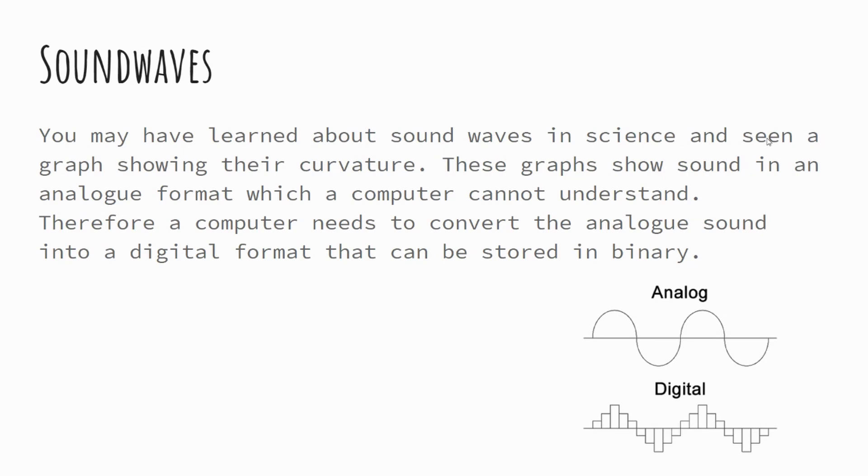So at the bottom right, you can see an example of an analog sound wave and then a digital representation of it. And you can notice that it's quite blocky. And that's because we're using binary data, so ones and zeros, to represent that curve. And therefore, a bit like in images where we use pixels, we'll use blocks to measure up the digital curvature of a sound wave.